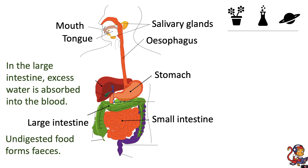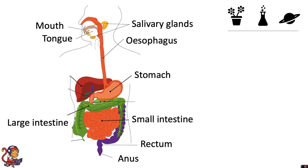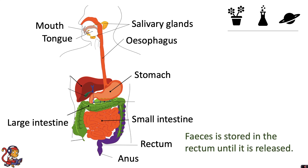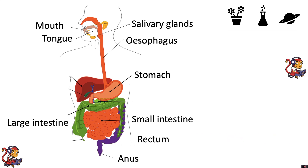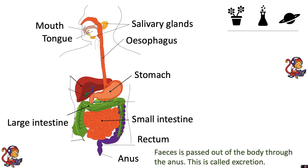The food then passes round into the rectum. Faeces is stored in the rectum until it is released, and finally faeces is passed out of the body through the anus. This is called excretion.